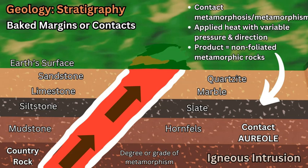Let's say we have these layers of sedimentary rock near the surface: sandstone, limestone, siltstone, and mudstone. When they are in contact with this igneous intrusion and the magma, metamorphosis occurs to these pre-existing country rocks. Sandstone is going to turn into quartzite with heat and pressure, limestone is going to turn into marble, siltstone is going to turn into slate, and mudstone will turn into hornfels.